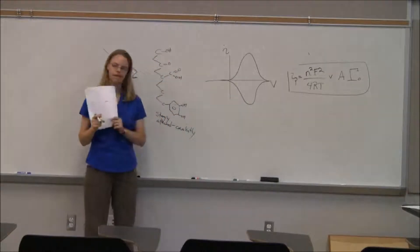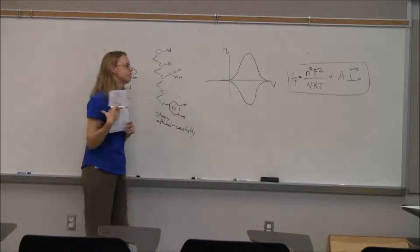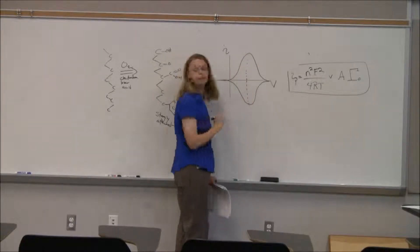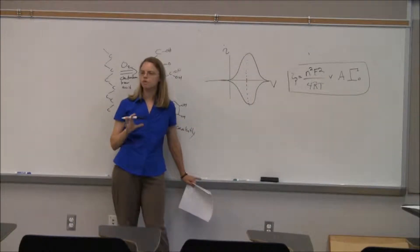That's what the voltammogram looks like. So again, this should look a little strange to you. So there are a few things going on. Number one, the peaks are not offset. If I draw it well, they will be at the same peak. So there's no delta E peak.